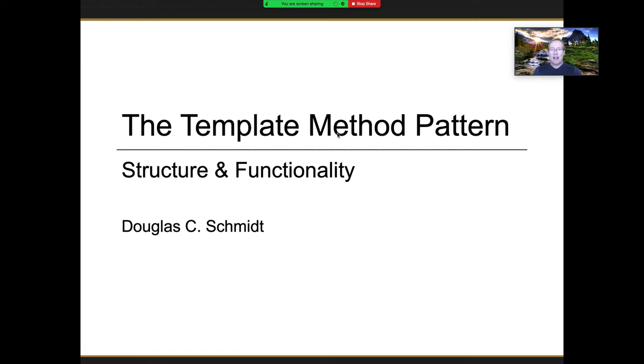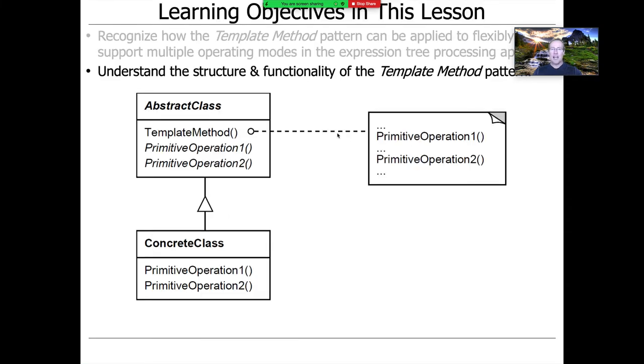Now that we've talked about the motivation in the context of our expression tree processing app, let's talk about the structure and functionality from the point of view of what's in the Gang of Four book, which naturally will be more generalizable than expression trees.